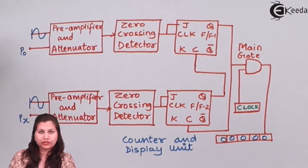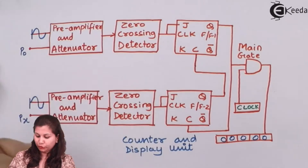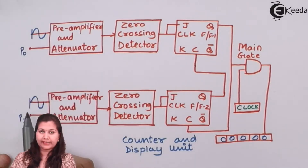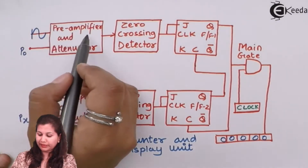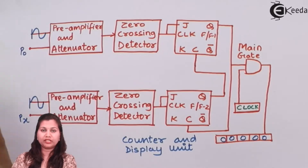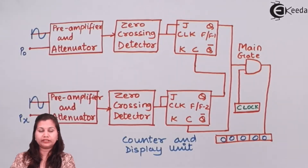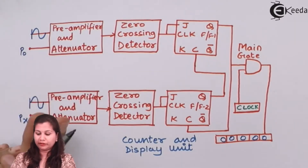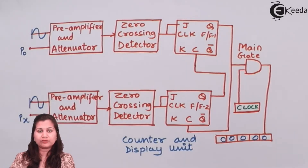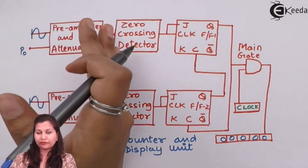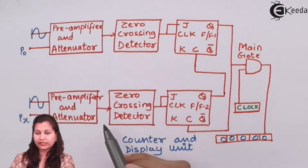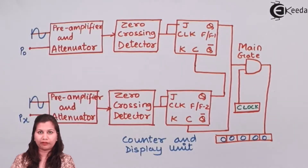This is the block diagram of the Digital Phase Meter. We have two input signals, P0 and Px, whose phase difference we want to measure. These are sinusoidal signals. These signals are first pre-amplified and attenuated — any noise or undesirable signals are removed, and if the signals are weak they are amplified. After amplification and attenuation, the signals pass through the zero crossing detector, which converts them into square waveforms.